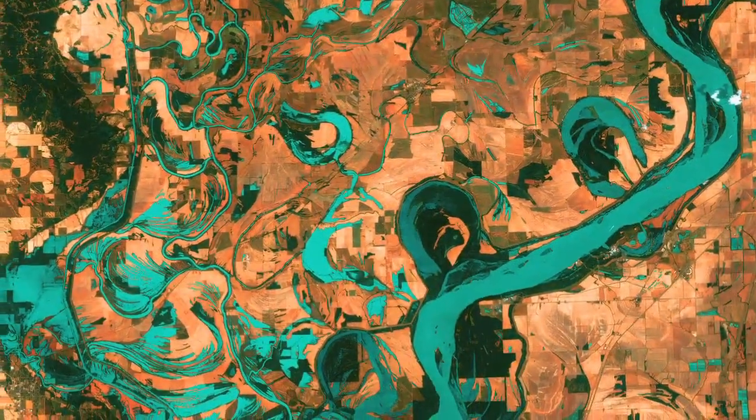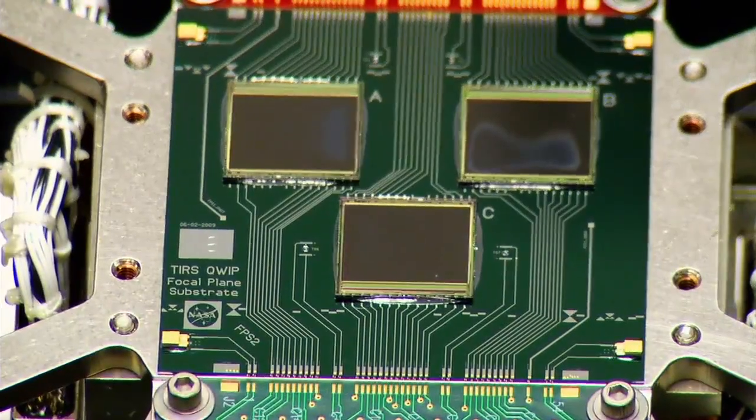And behind these images lies QUIP, the Quantum Well Infrared Photo Detector, which is processed here in the Detector Development Lab at NASA Goddard. Similar to the sensor in your digital camera or your cell phone, the QUIP detector is designed to be more sensitive and to detect specific wavelengths. Let me show you how these high-end detectors are created.